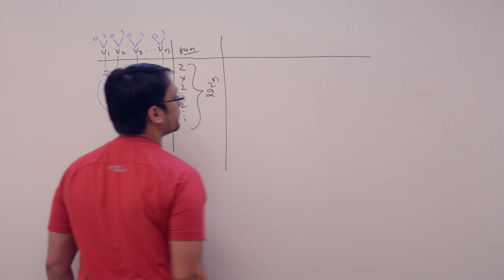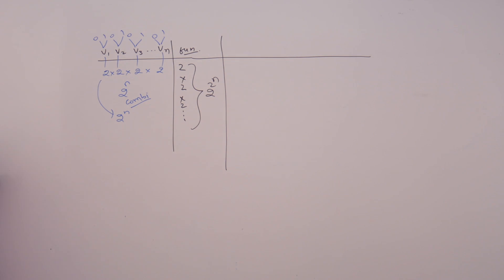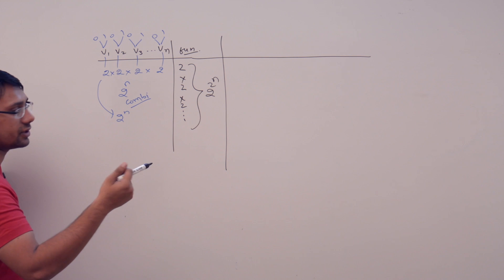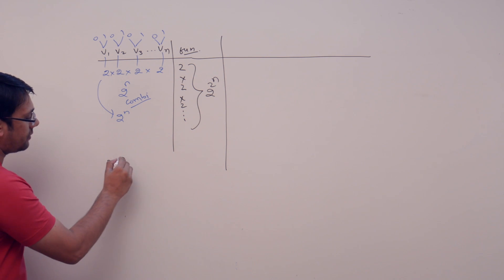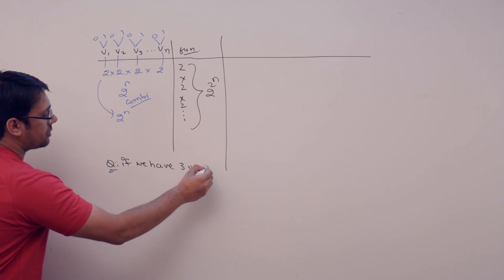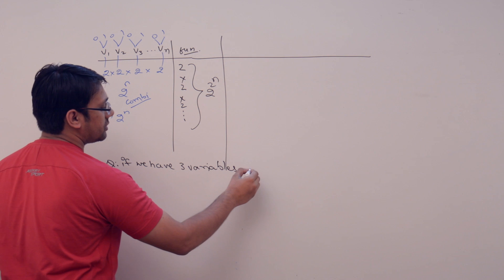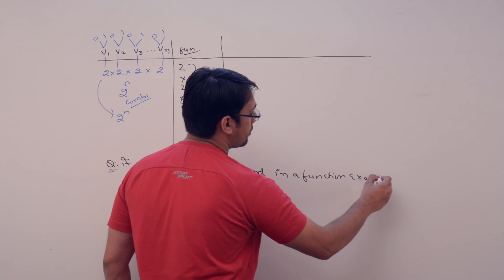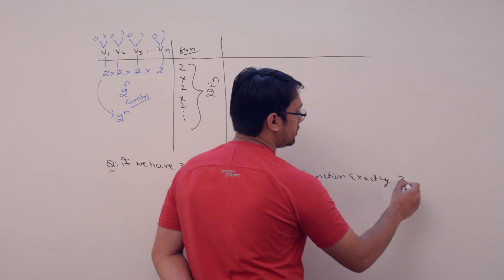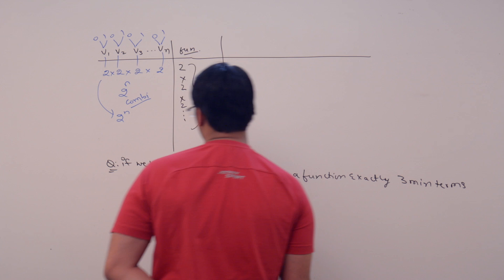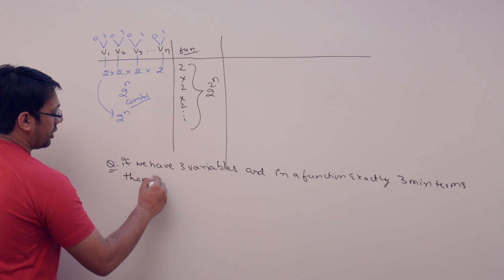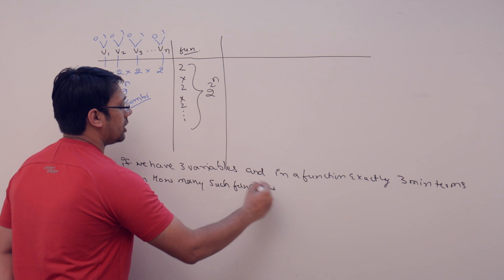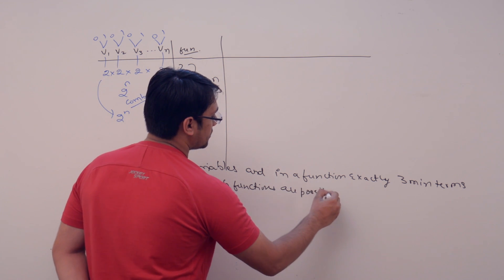Now let me modify the previous question. Let us make it easier first and then a little harder. If we have three variables and in a function there are exactly three min terms, then how many such functions are possible?